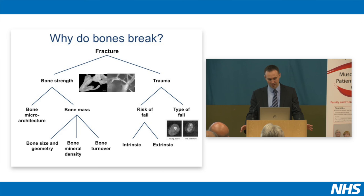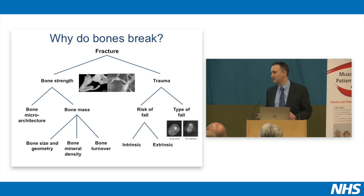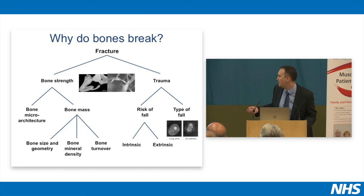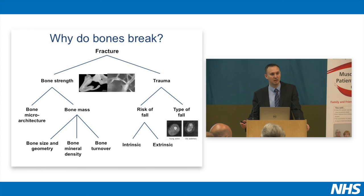I'm going to start from first principles with the question of why do bones break. In essence there are two issues. The first is the strength of the bone, and the second is about the trauma applied to that bone. In terms of how strong a bone is, this is dependent on its mass, which is dependent on the size of the bone and its bone density, and also the microstructure within the bone. The trauma applied to bones usually occurs as a result of a fall, so it's important to know what risk of fall an individual has, and also what type of fall they have.